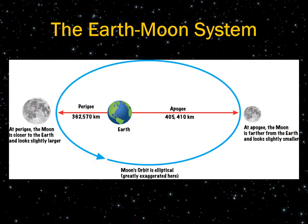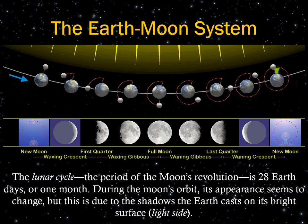The Moon is a satellite — a rocky body that maintains an orbit around a larger planetary body by maintaining a speed fast enough that it can't be pulled into the planet and destroyed. The Moon's orbital path is also faster than Earth's orbital path around the sun. The lunar cycle, the period of the Moon's revolution, is approximately 28 Earth days, or one month. During the Moon's orbit, its appearance seems to change due to the shadows Earth casts on the bright surface of the Moon.